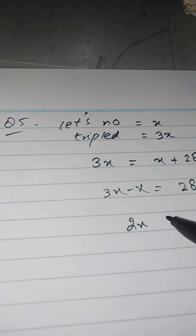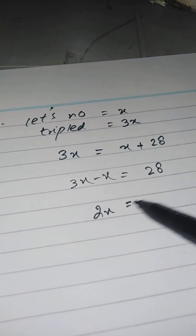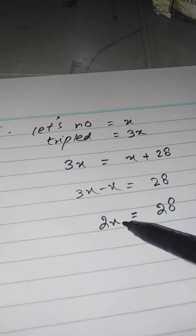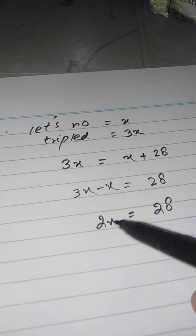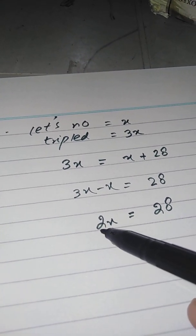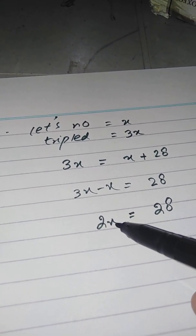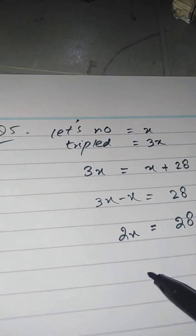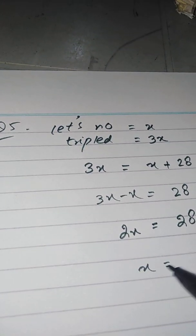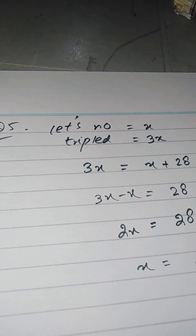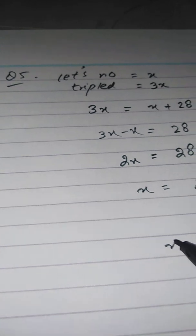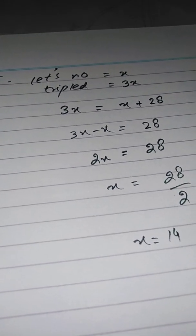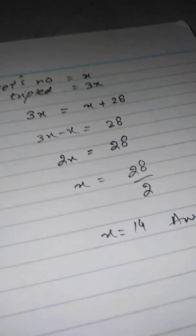To find the value of X, the two is multiplying X, so it moves to the other side and divides 28. So X equals 28 divided by 2, which gives the number as 14. This is your answer.